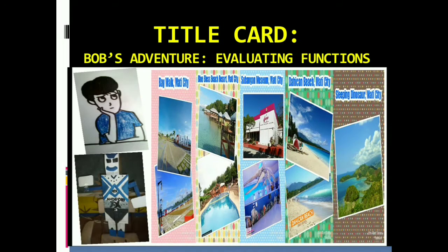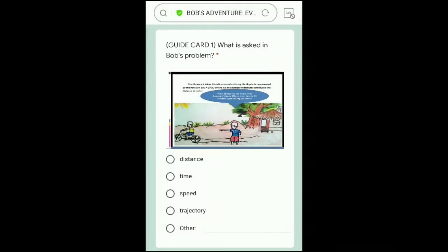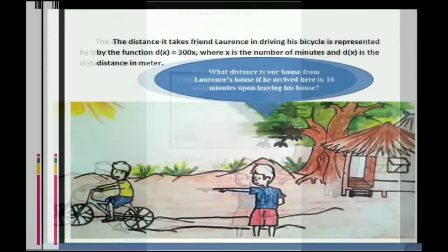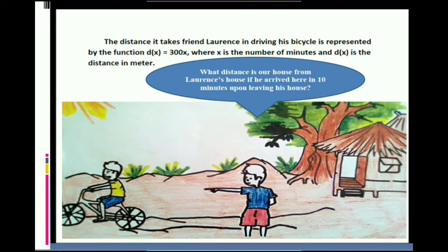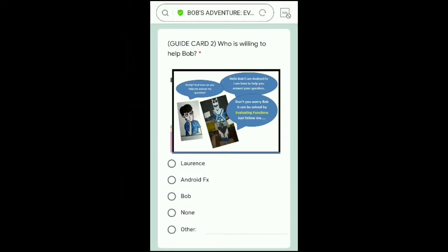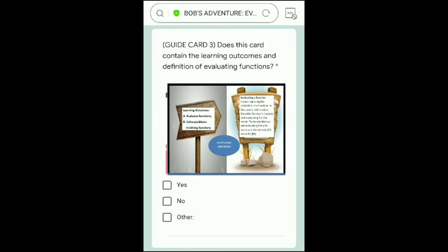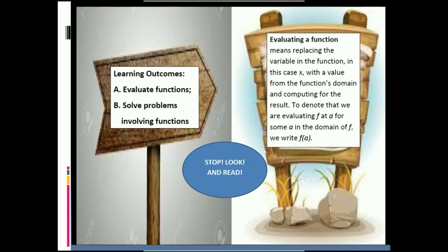Title: Bob's Adventure — Evaluating Functions. Guide Card 1 contains Bob's Problem: given the function D of X equals 300X, where X is the number of minutes and D of X is the unknown distance. Guide Card 2 is a scenario where Android FX is helping Bob solve the problem. This card contains the learning outcomes and definition of evaluating functions.